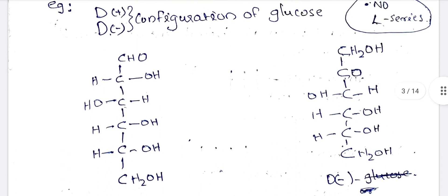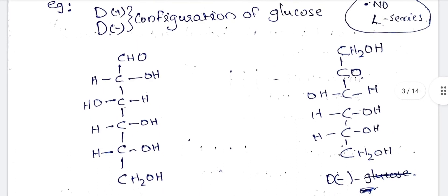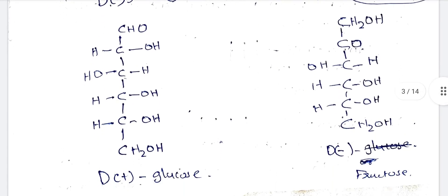We refer to glyceraldehyde for any other compounds. The OH on the right side of the carbon indicates the D-series. The OH on the left side indicates the L-series. You can observe the right side as the H side or OH side accordingly.